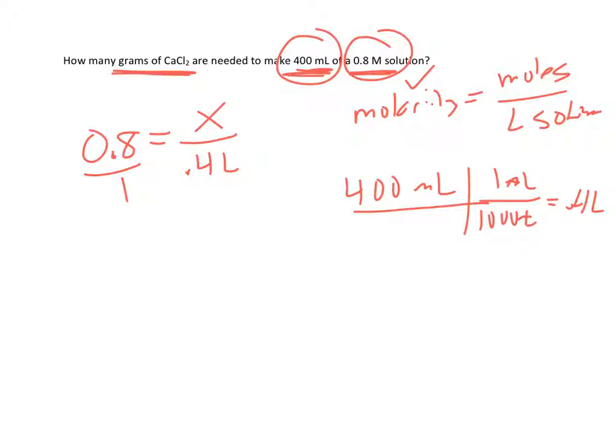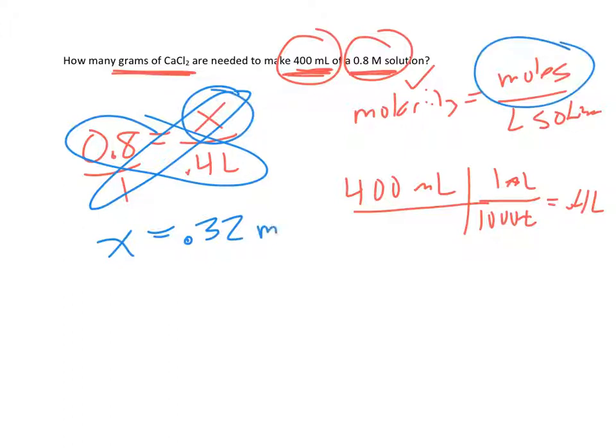And I usually say cross-multiply and divide is a good way to do it. So x times 1 is x. 0.8 times 0.4 is 0.32. So x is 0.32, but be careful. What are the units up here? It's always in moles. And this isn't asking us for moles. It's asking us for grams. So we're going to have to calculate the molar mass of CaCl2. So we'll add up on the periodic table what CaCl2 is. And it turns out it's 1 mole of CaCl2 is 110.98 grams.